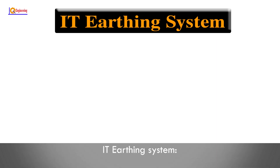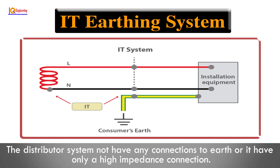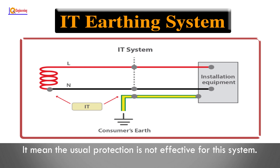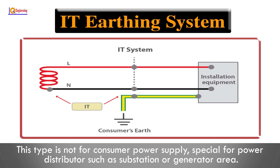IT earthing system: This system is similar to the TT system but totally different in earthing supply. The distributor system has no connection to earth, or only a high impedance connection, meaning the usual protection is not effective. This type is not for consumer power supply — it is special for power distributors such as substations or generator areas.